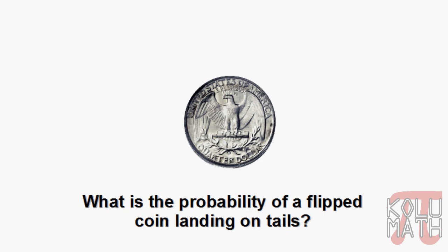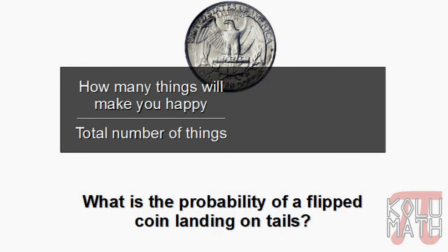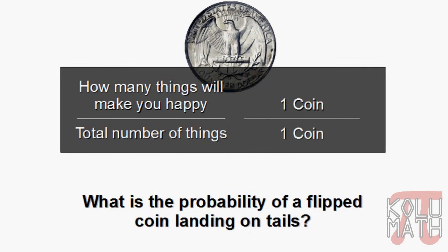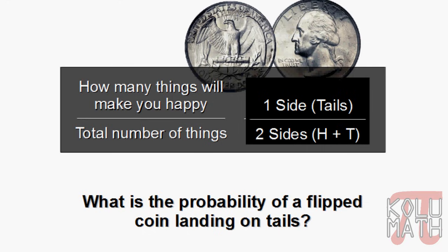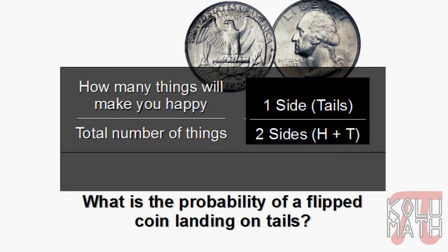Let's take a look at another probability question. We've got a quarter here, and we want to know: what's the probability of a flipped coin landing on tails? We've got one coin, and the total number of things we have is one coin. Wait — is there a problem with that? Let's look at our tool again. Is it the one coin that's going to make us happy? No — it's the specific side of the coin. A coin has two sides, so the thing that makes us happy is the side tails, not the coin itself. The total number of things is two sides. We pop that into a fraction and we get 50%.